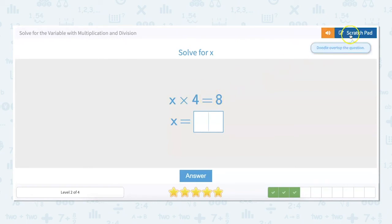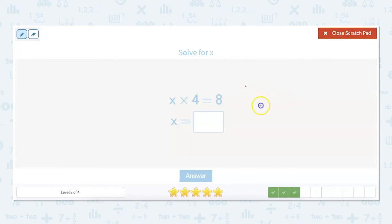This one x times 4 equals 8. Let's work it out. So x times 4 equals 8. We need this x to be by itself. So we're getting rid of our 4. So 4 divided by 4. And if we do that over here we need to do the same thing over here. So x equals 8 divided by 4 equals 2. So that means x equals 2.